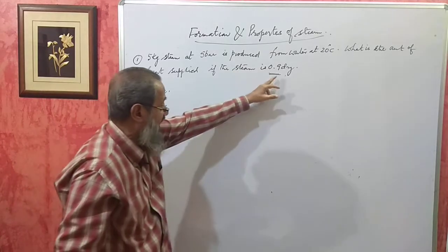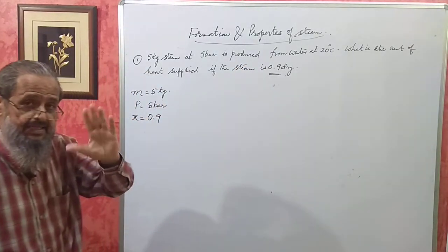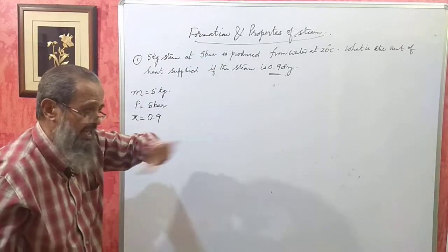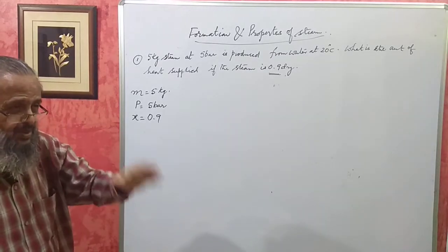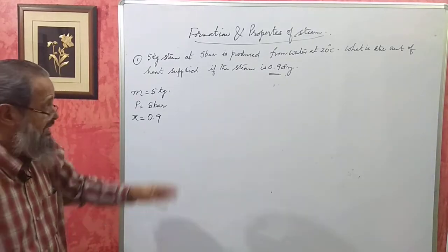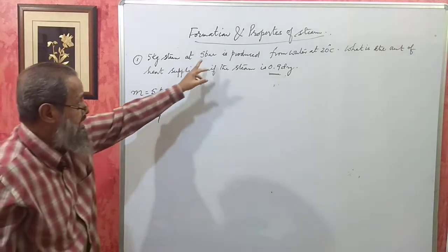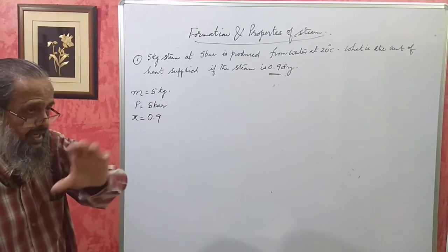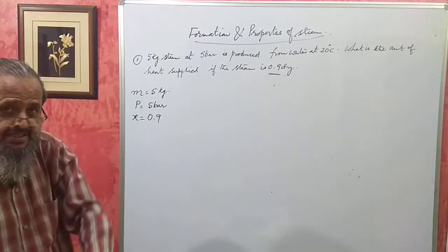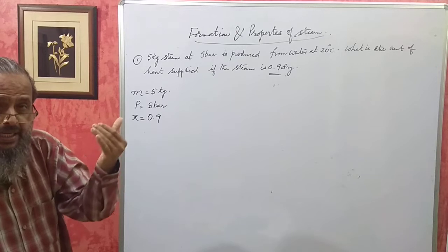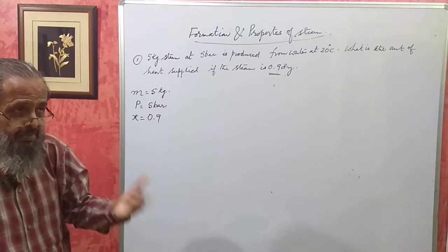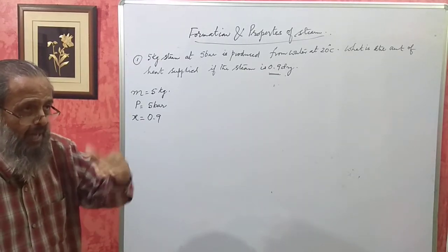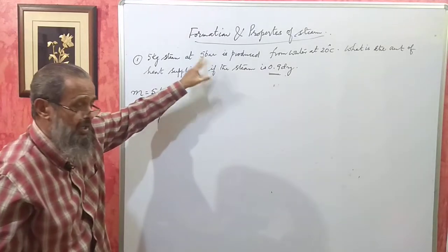If the steam is dry, they will say dry saturated or just saturated — those mean the same thing. If it is superheated, they will give the temperature along with pressure, or they will give the degree of superheat — meaning the temperature is that many degrees above the saturation temperature corresponding to its pressure. The initial water temperature T1 is 20°C.